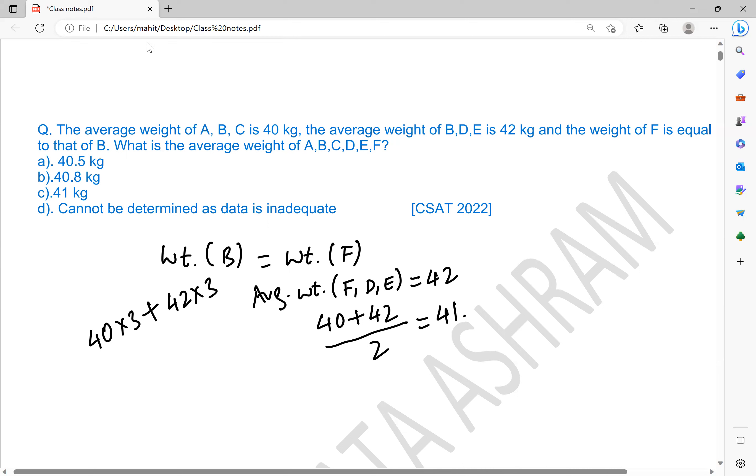Since the sum of the weights would be average times number of persons, by this we reach 40 times 3 and 42 times 3. Now what will be the average weight of all six of them? Sum of the weights of all six divided by 6, because six persons are there.